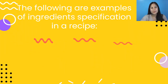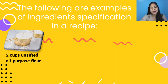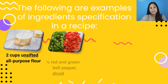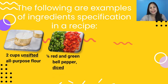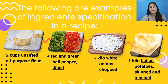The following are examples of ingredient specification in a recipe. When we talk about specification, it describes ingredients in specific terms. For example: two cups unsifted all-purpose flour; one-fourth red and green bell pepper, diced; one-fourth kilo white onions, chopped; and one kilo boiled potato, skinned and mashed. Notice the underlined descriptive words — those are examples of ingredient specification in a recipe.